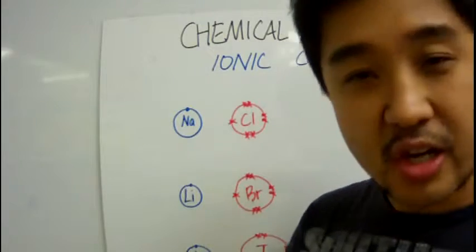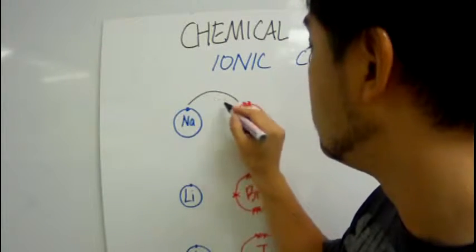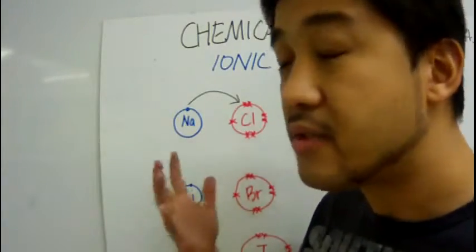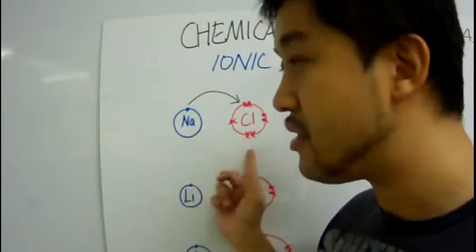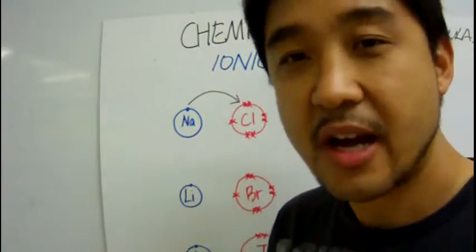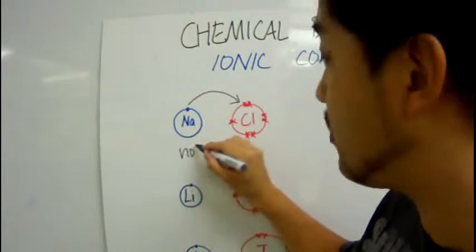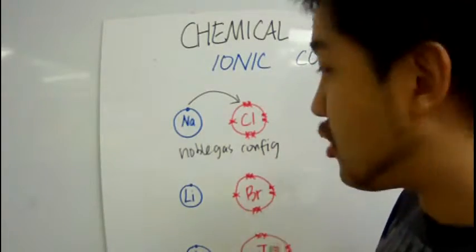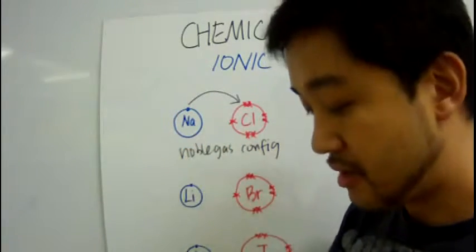When the two elements come together with enough force, you're going to get a transfer of electrons from sodium to chlorine. Why does sodium give up its valence electron? Because these elements are not happy — they want to achieve a noble gas configuration. You need to know that they want to achieve the noble gas configuration.